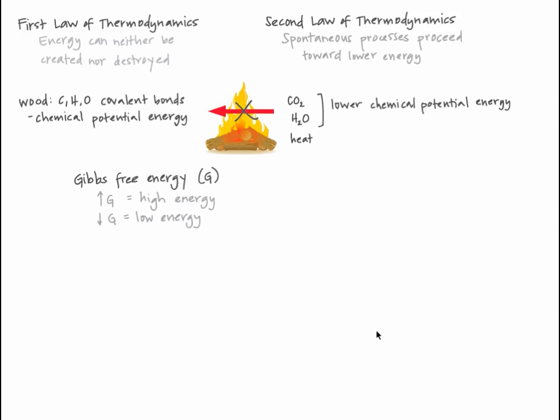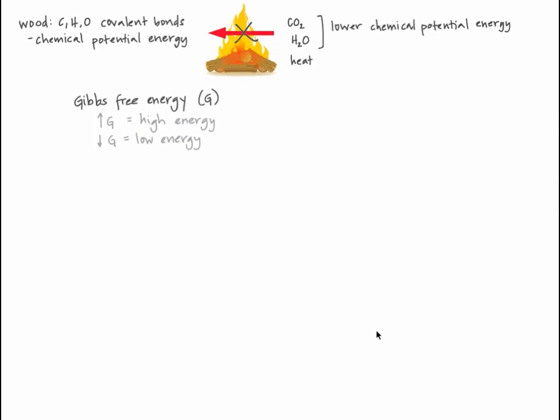The measure of a molecule's energy that can be harnessed to do work is Gibbs free energy, abbreviated G. A molecule with high usable energy has a high G, and a molecule with low usable energy has a low G. It's hard to determine the free energy of a molecule, but it's much easier to determine the change in free energy when one molecule is transformed into another. So we'll spend most of our time talking about a change in Gibbs free energy, or delta G.